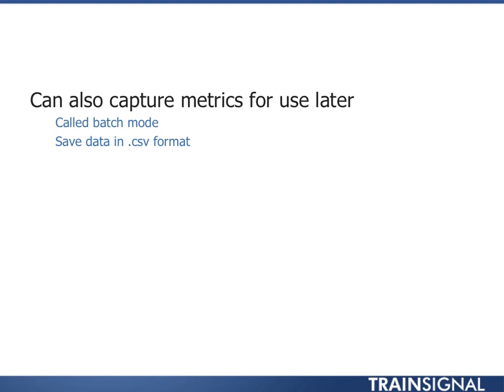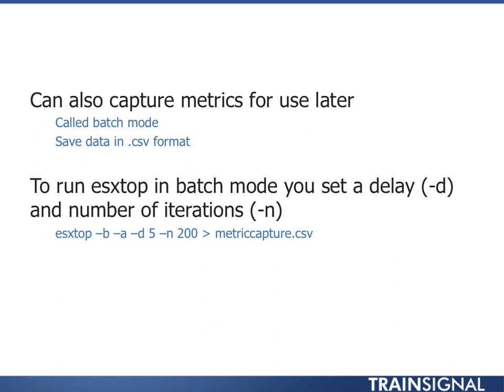You also have the option to run ESX-Top in batch mode, save the data in CSV format, and pull it into another tool — handy for capturing data over a length of time and reviewing findings later. You use a delay like -D5, which means every five seconds, and iterations as the number of times. So five seconds times 200 iterations means running for 1,000 seconds, outputting to a metriccapture.csv file. Don't get too aggressive since it puts load on the system; every few seconds is a good snapshot interval.